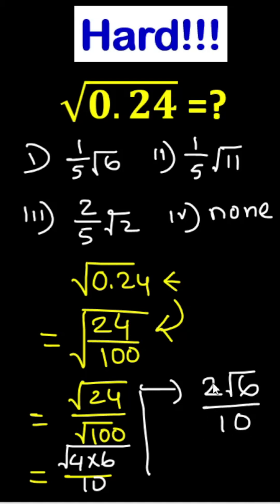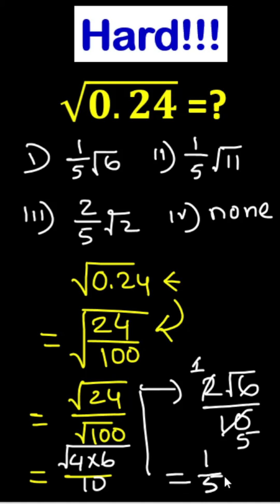Now we can divide by 2, so it becomes 1 over 5 root 6. Our answer is 1/5 × √6. So our answer is number 1.